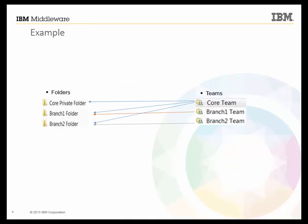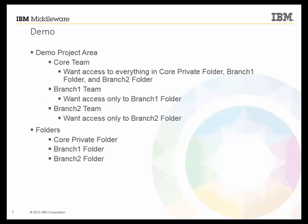Let's look at an example. Suppose we have three teams — Core Team, Branch 1 Team, and Branch 2 Team — and three folders: Core Private Folder, Branch 1 Folder, and Branch 2 Folder. We want Core Team to have access to all three folders, but Branch 1 Team only to have access to Branch 1 Folder, and Branch 2 Team only to have access to Branch 2 Folder. We'll model this in RTC with a project area, three team areas, and three folders, and we'll see how this is solved with three access groups.